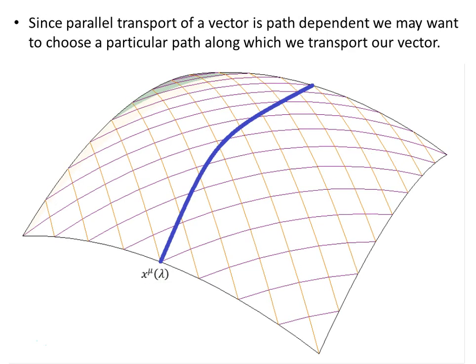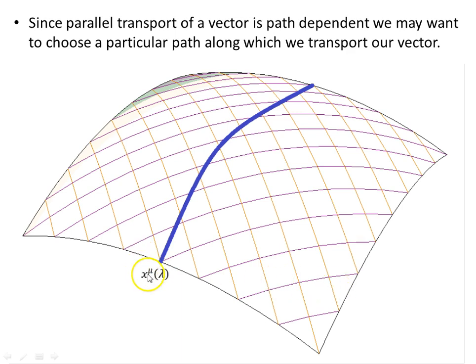Let's look at parallel transport. We want to look at the parallel transport of a vector — we know it's path dependent, but we may want to choose a particular path along which we transport our vector. Here's our path in blue, parameterized in terms of the variable lambda, so each coordinate is given as a function of lambda, depending on how many coordinates we have for our manifold.